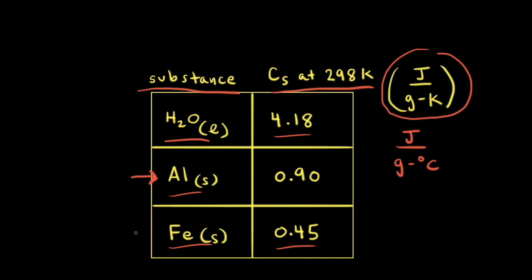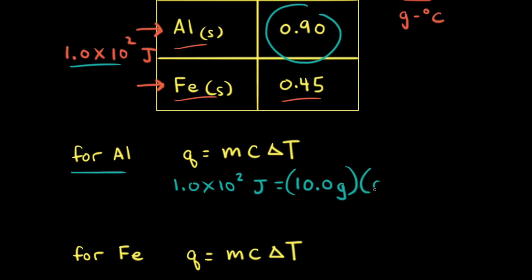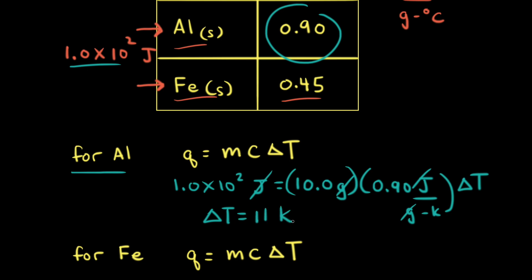Let's compare solid aluminum and solid iron by adding 1.0 × 10² joules of energy to 10.0 grams of each metal. For aluminum: Q = MCΔt → 1.0 × 10² J = (10.0 g)(0.90 J/g·K)(ΔT). The joules and grams cancel, giving ΔT = 11 Kelvin, or 11 degrees Celsius.